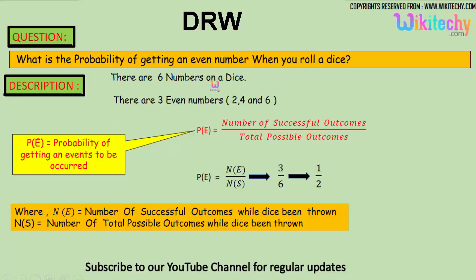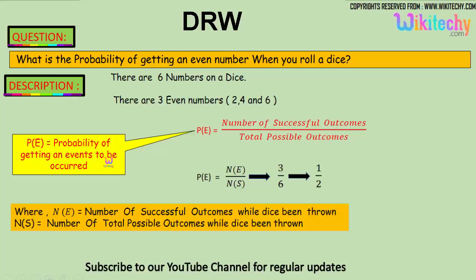The answer is there are six numbers on a dice and we got three even numbers: 2, 4, and 6. So here is the formula — probability of getting an event is the number of successful outcomes divided by the total possible outcomes.